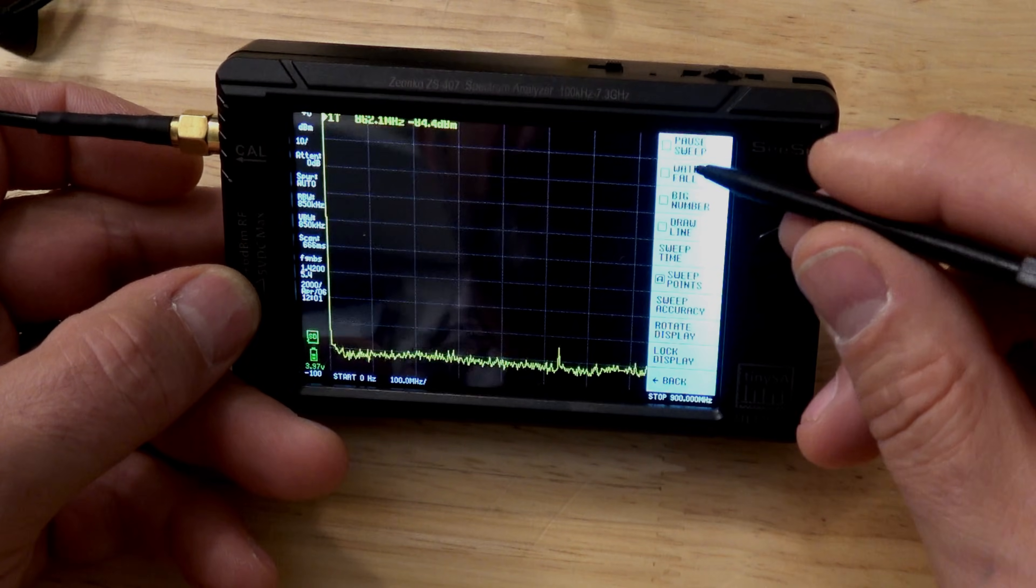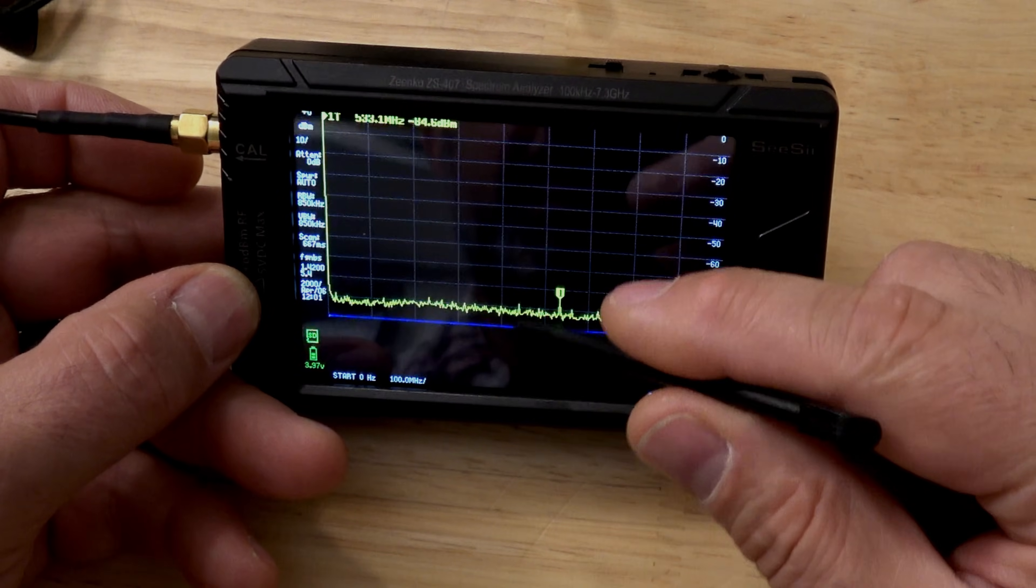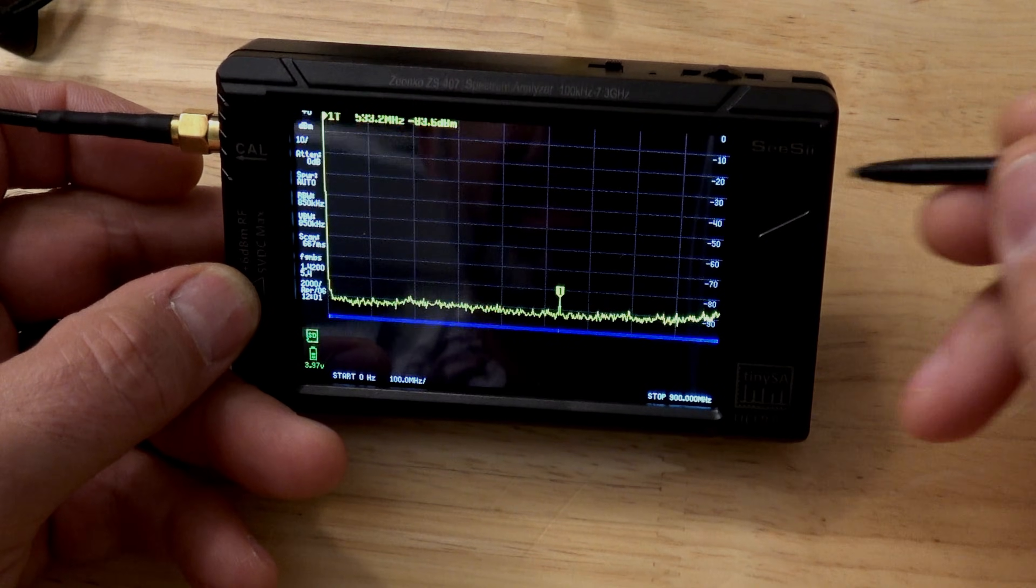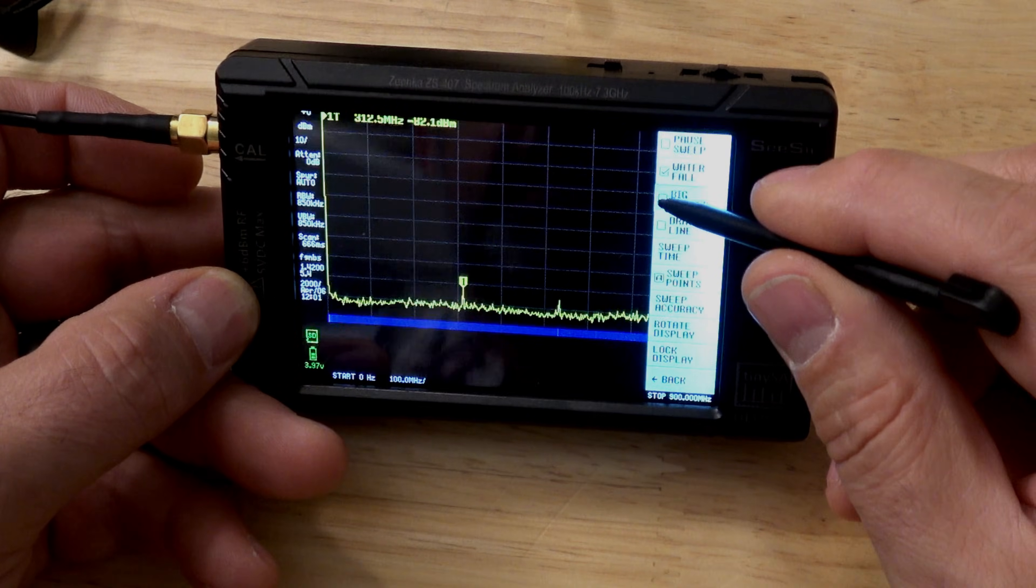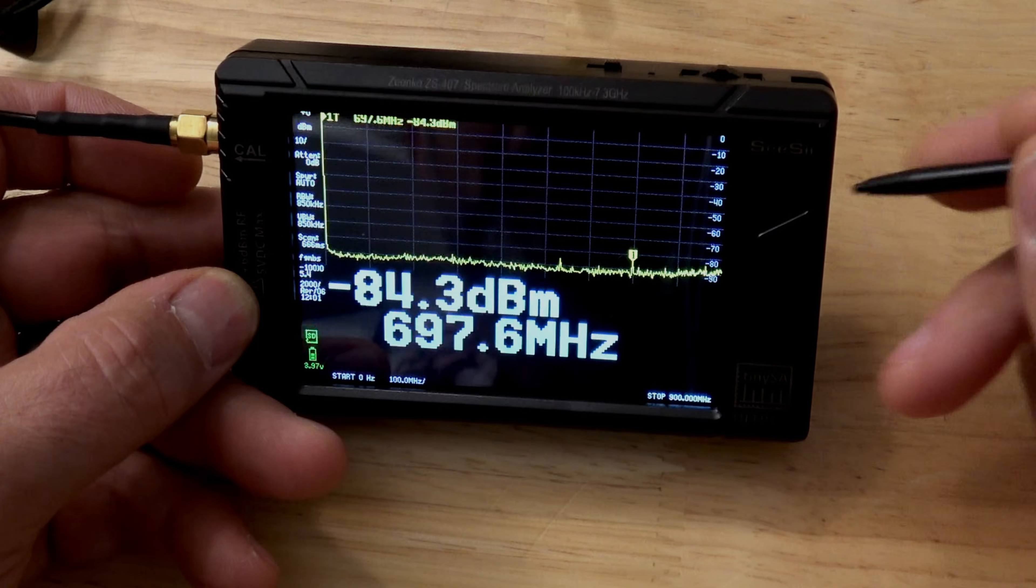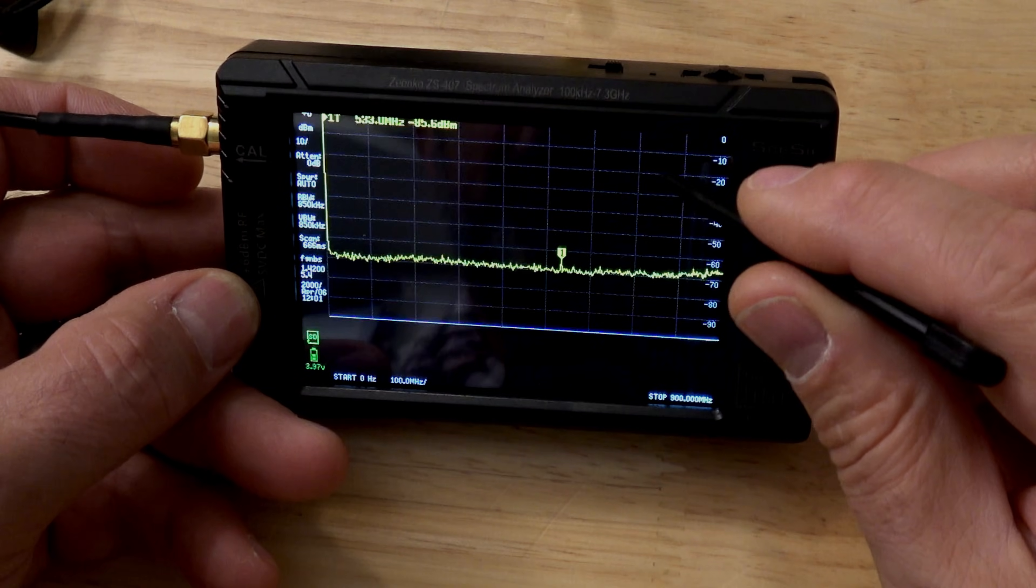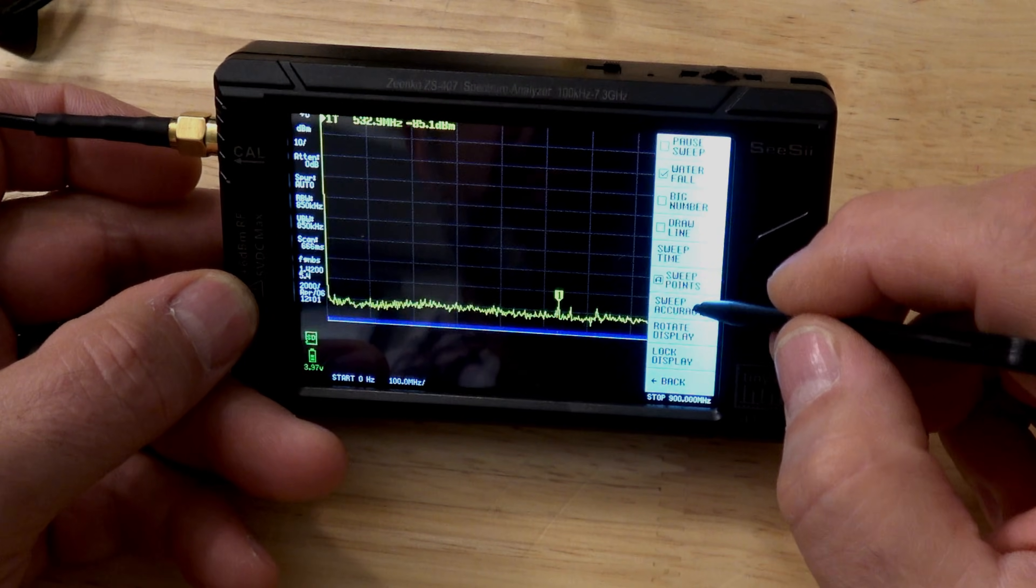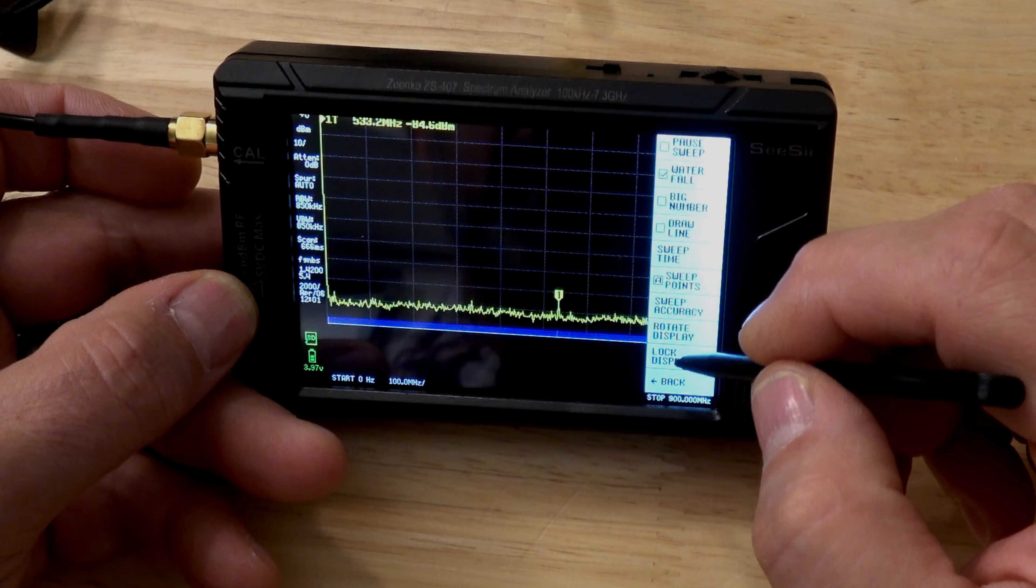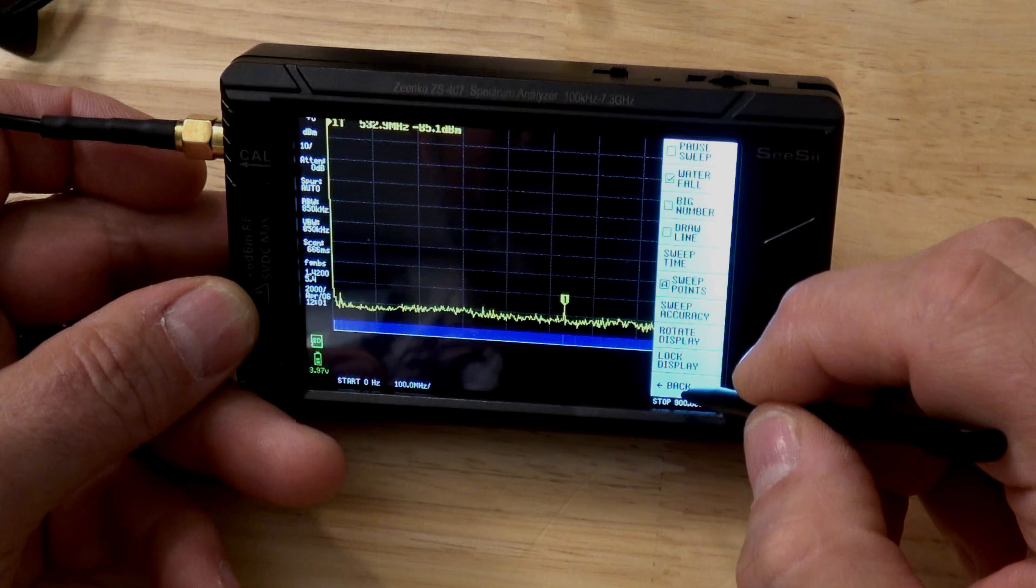Trace, right? Well, we don't need that. Display, do we want to pause the sweep? Do we want a waterfall effect? That's going to come out underneath that. I like that. I'm going to keep that. Okay, do we want big numbers? Yeah, I'll be honest with you, sort of. That might be handy for somebody with my kind of vision, but for right now, we'll keep it on waterfall. All right, then we have sweep time, sweep points, sweep accuracy, rotate display, lock display.